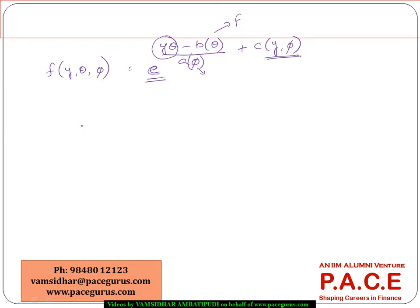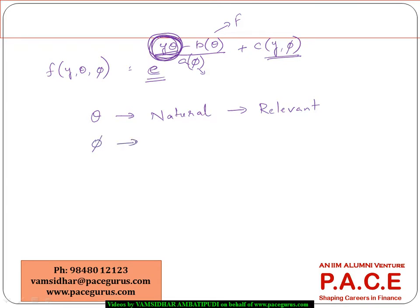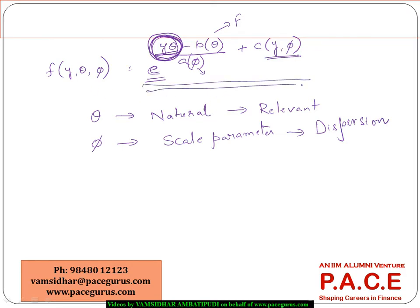In this formulation we have two parameters. Theta is called the natural parameter — it is more relevant to the model as it relates the response variable y to the covariates. Phi is known as the scale parameter, typically a measure of dispersion. Every distribution that can be expressed in this form can be called an exponential family of distributions, having a natural parameter and a scale parameter.